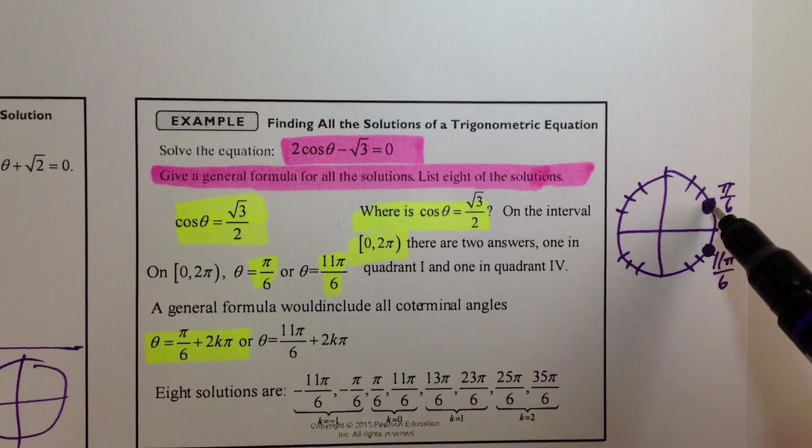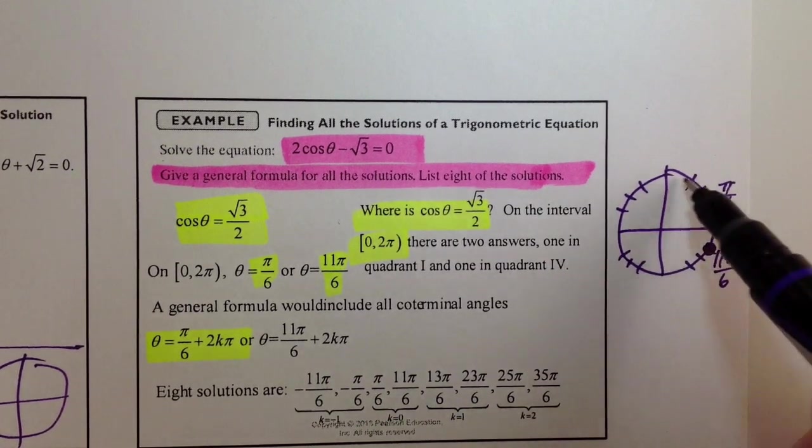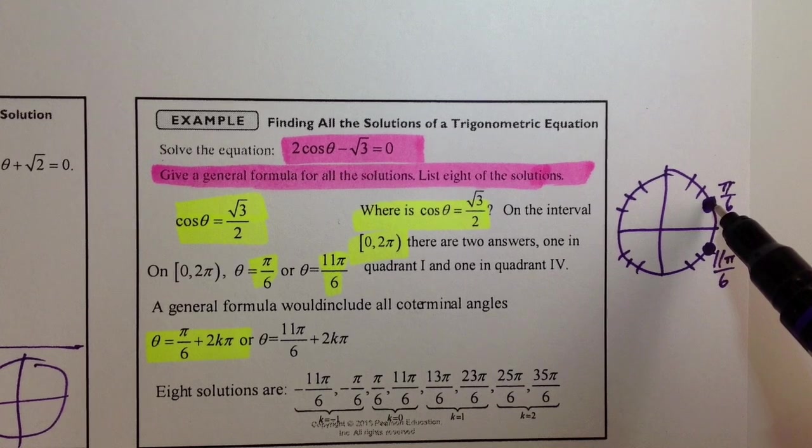So when you take pi over 6 and you add 2 pi, you get back here, and then you add 2 pi again, add 2 pi again. You keep adding 2 pi, you get back to that same angle. And so,